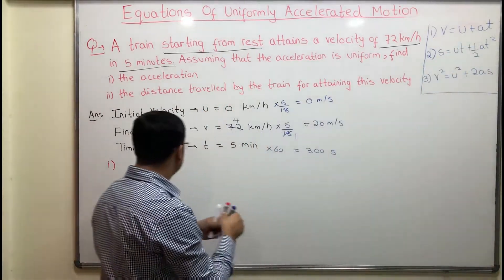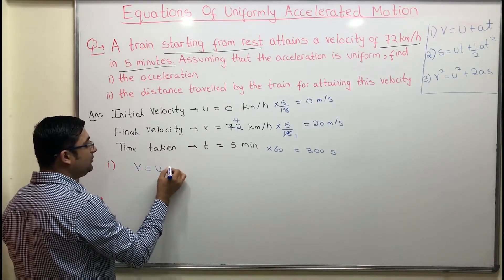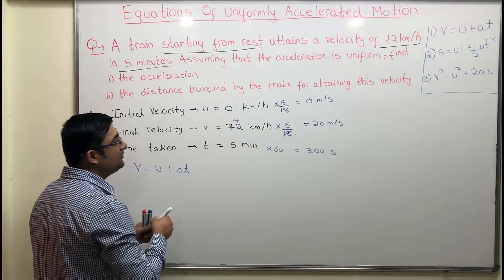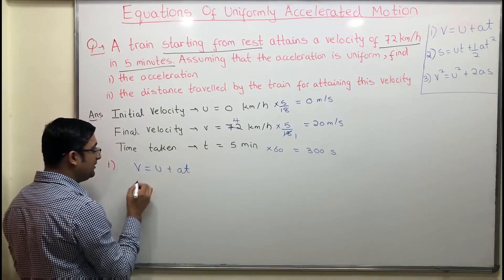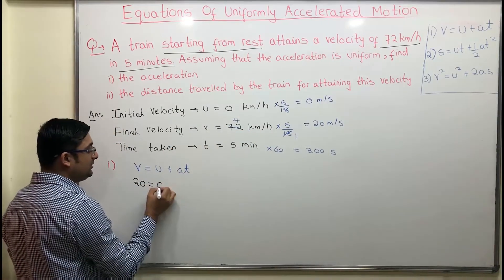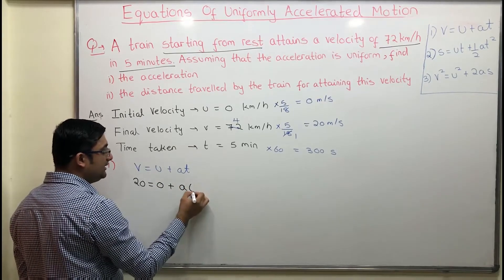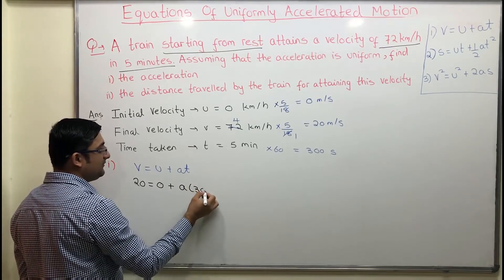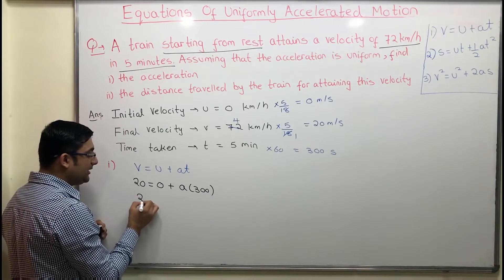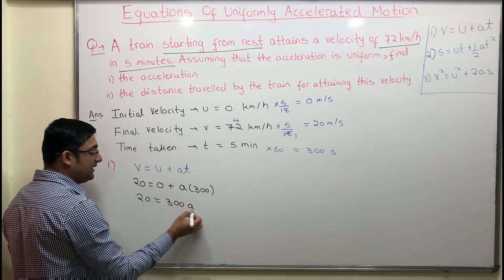u, v, t, and a — these match the first equation of motion. So we use v is equal to u plus a times t. Substituting the values: 20 is equal to 0 plus a into 300. From here we get 20 is equal to 300a.